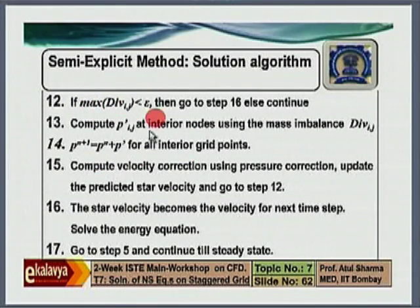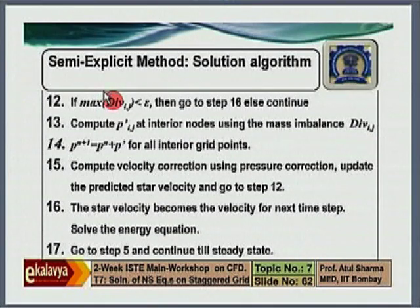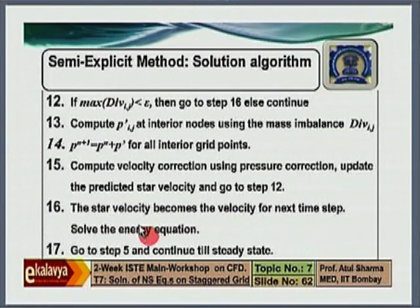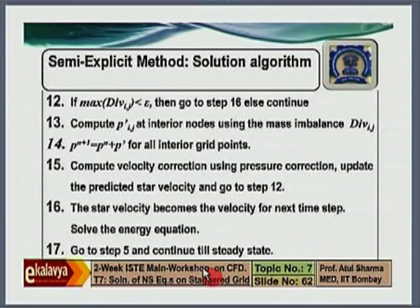Once you have obeyed the mass balance, the predicted star velocity which you have obtained becomes the velocity for the next time step. Then you solve the energy equation if it is a forced convection problem. You check for steady state; otherwise, go back and continue until steady state.